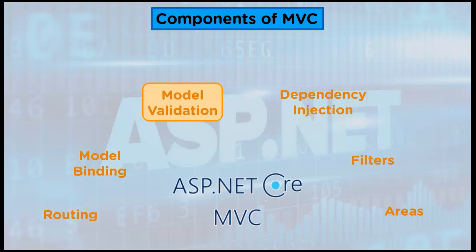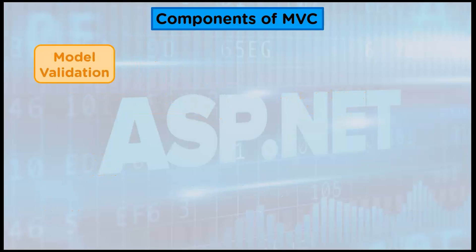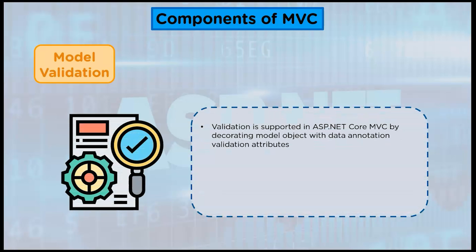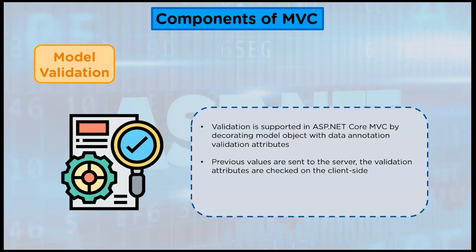Next we have model validation. Validation is supported in ASP.NET Core MVC by decorating your model object with data annotation validation attributes. Before values are sent to the server, the validation attributes are checked on the client side. The framework validates request data on both the client and the server side.